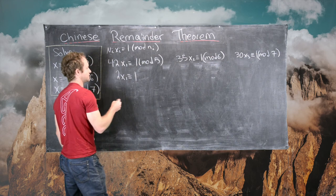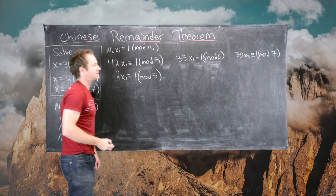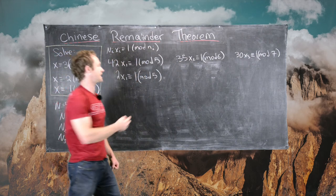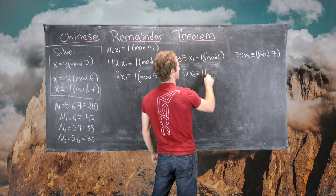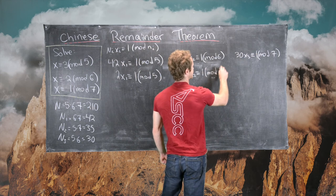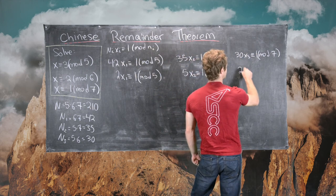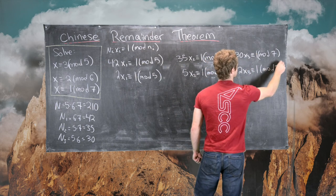So 35 is the same thing as 5, so here we have 5 X2 is congruent to 1 mod 6, and here we have 30 X3 is the same thing as 2 X3 mod 7.